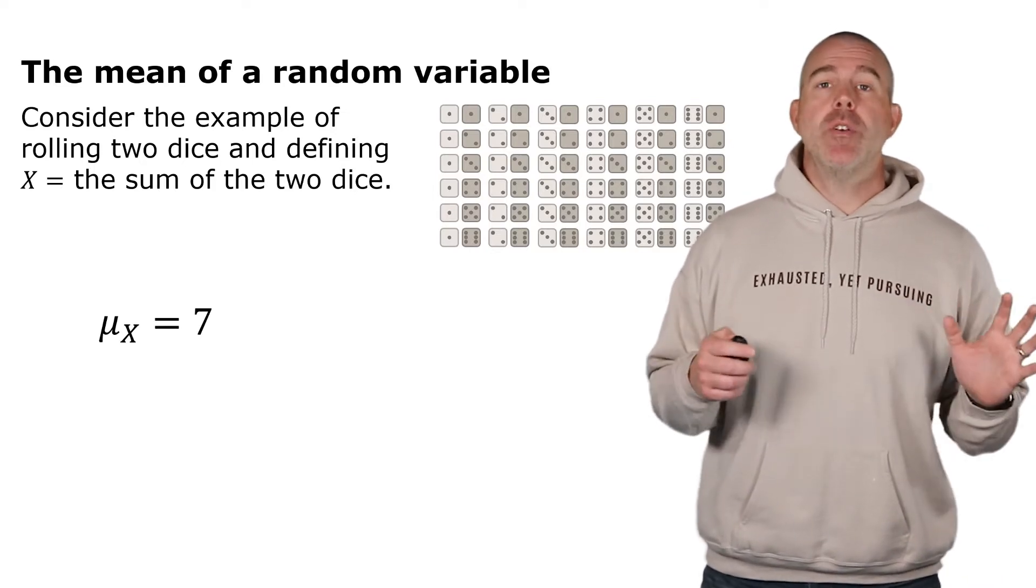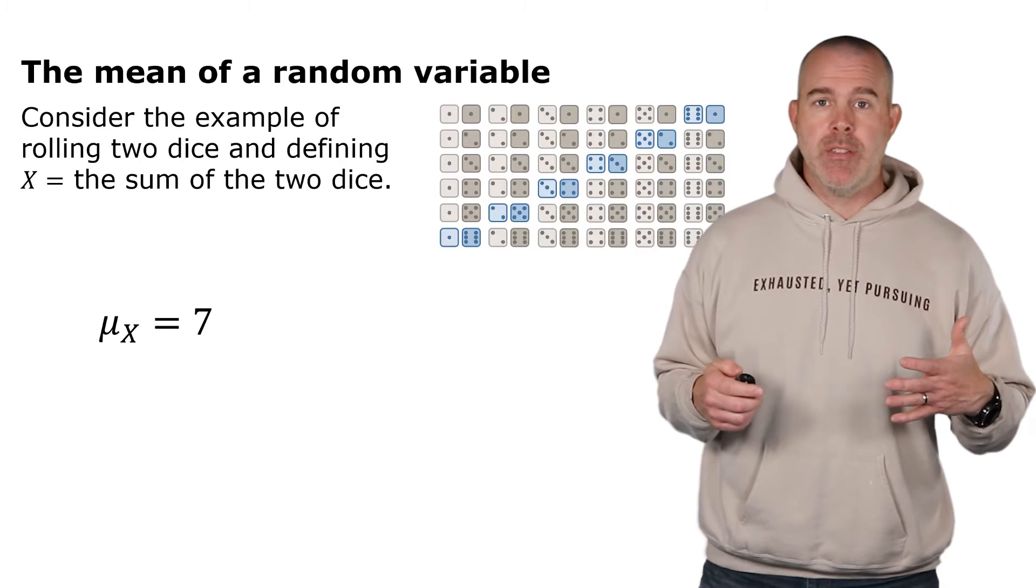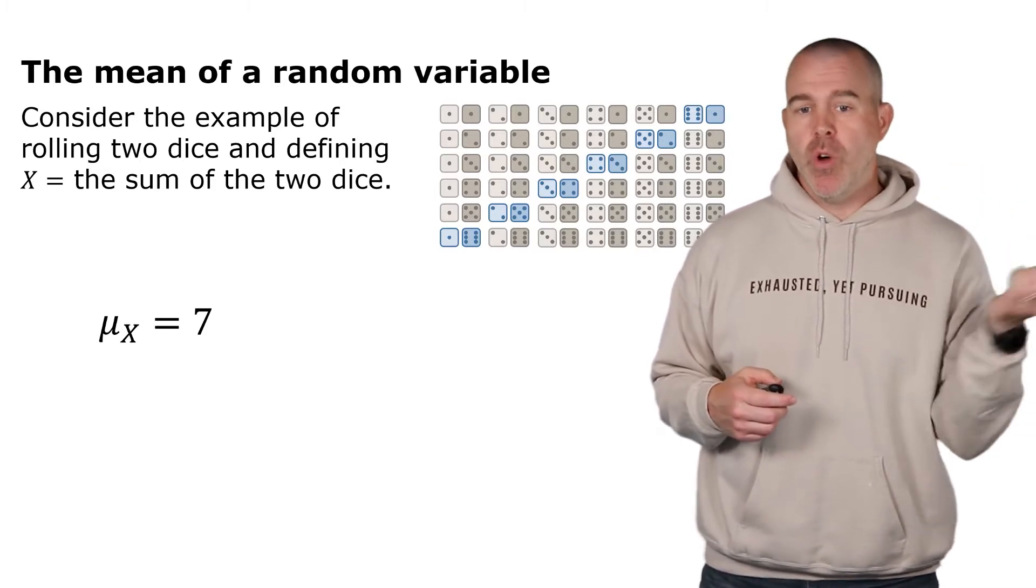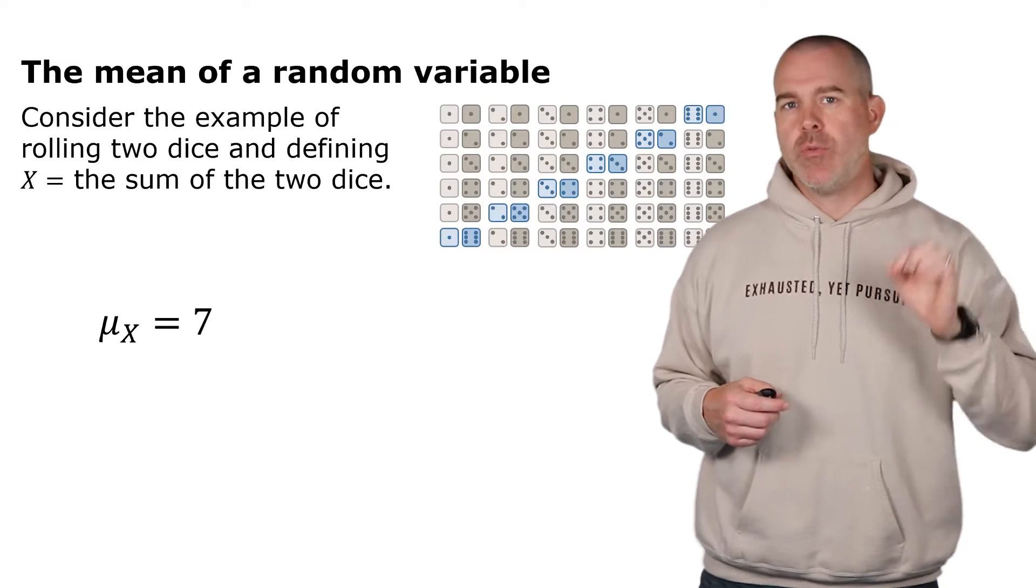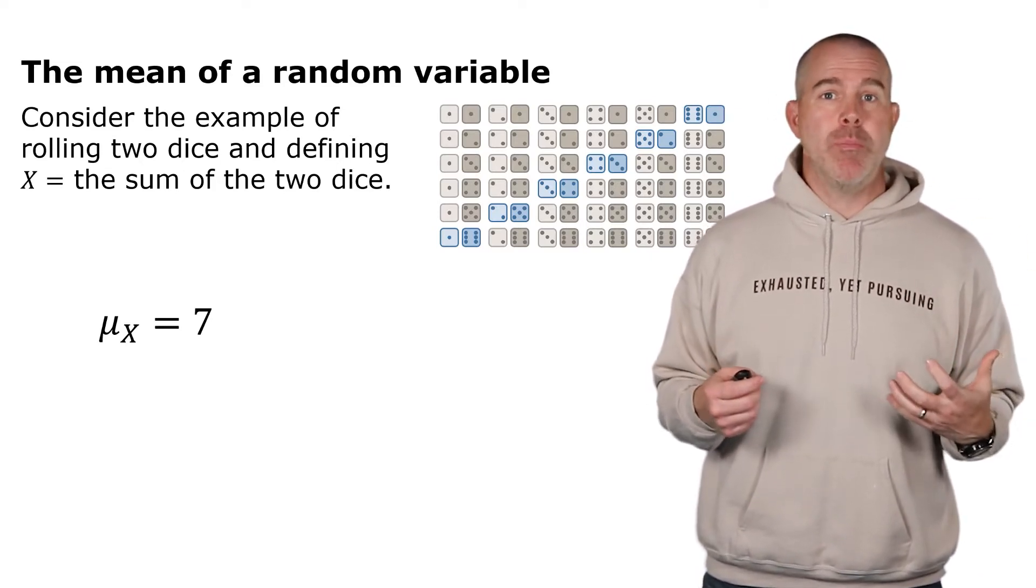Now that doesn't mean that it's always going to be seven. In fact, there's only six of them. There are six sevens. What it means is in the long run, our average if we roll two dice, write down the sum, roll two dice, write down the sum, roll two dice, write down the sum—in the long run our average will be seven.